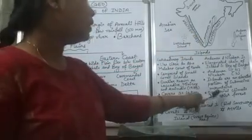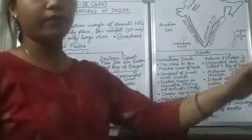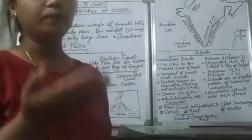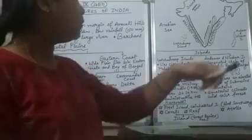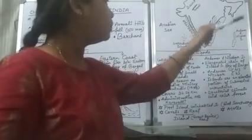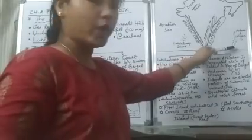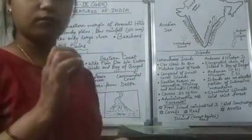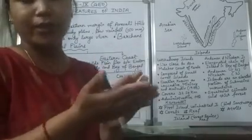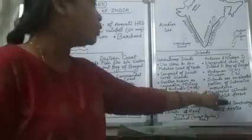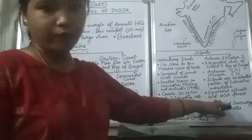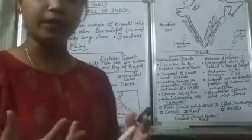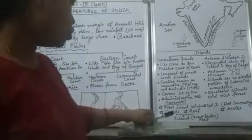The Andaman and Nicobar islands experience an equatorial climate, and that is why we have thick forests in this region because it is very close to the equator. The southernmost point of our country is Indira Point, which lies at 6 degrees latitude — very near to 0 degrees latitude. Due to this equatorial climate, it experiences good rainfall and has very thick forest cover.